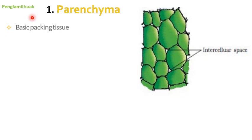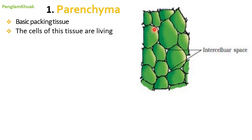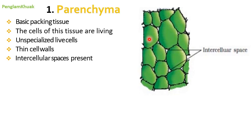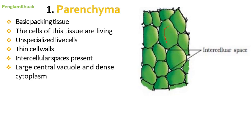Parenchyma cells are the first type of simple permanent tissue and are the basic packaging tissue. The cells are living and unspecialized — meaning they can give rise to one or more different types of specialized cells and form different types of complex permanent tissue. The cell walls are very thin, and parenchyma cells have intercellular spaces between adjacent cells and a large central vacuole.